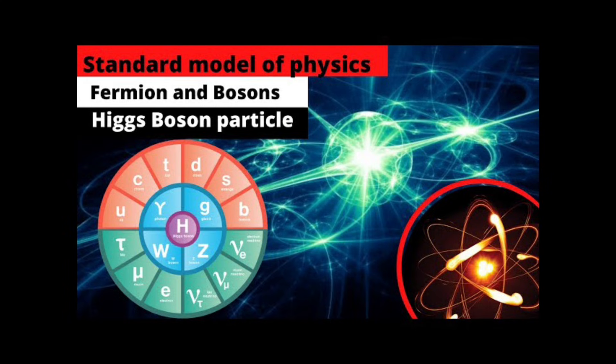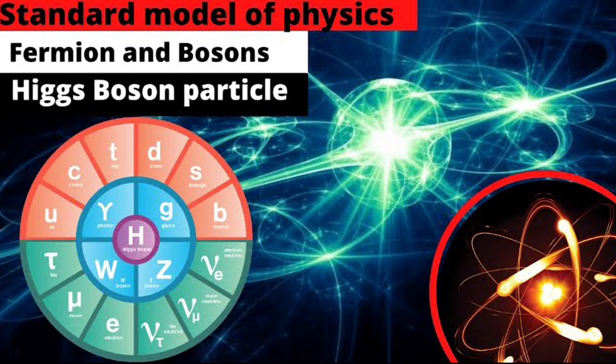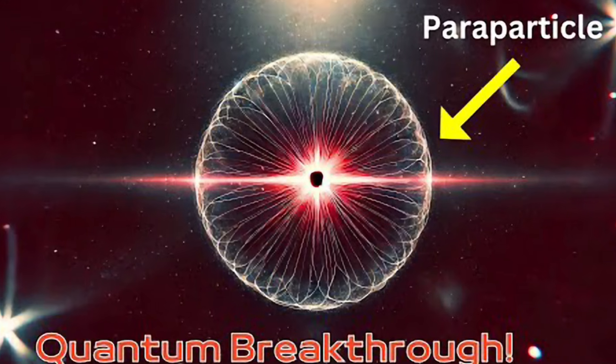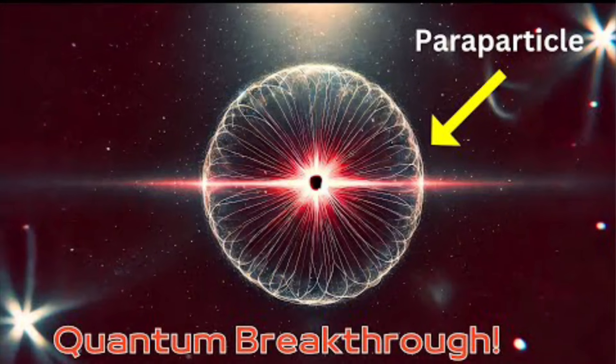The other group contains bosons, which include particles linked to forces like photons and the Higgs particle. These two families differ in their spin values and in how many can occupy the same place at once.